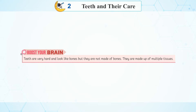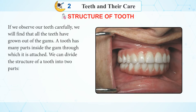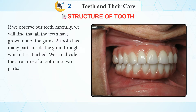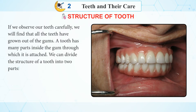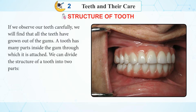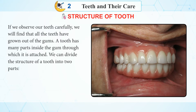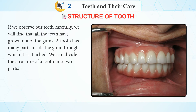Teeth are very hard and look like bones, but they are not made of bones. They are made of multiple tissues. Structure of tooth: if we observe our teeth carefully, we will find that all the teeth have grown out of the gums. Our tooth has many parts inside the gums through which it is attached. We can divide the structure of our tooth into two parts.